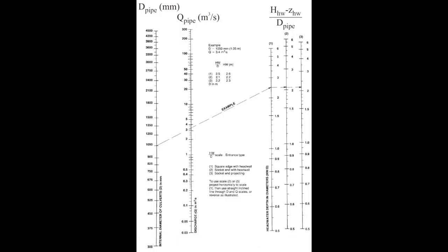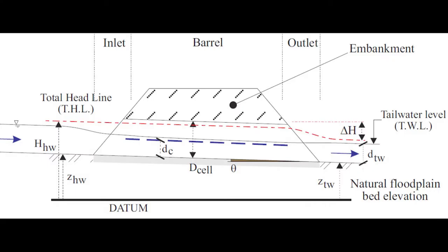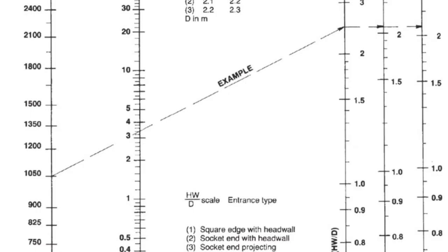For inlet control conditions, the upstream flow condition may be estimated using a nomograph. This nomograph was slightly modified from the Concrete Pipe Association of Australasia with permission, and the definitions are shown in the following sketch. The nomograph may be applied to a single-cell culvert as well as a multi-cell pipe culvert.